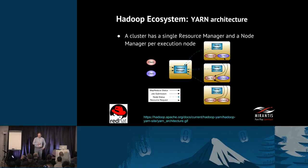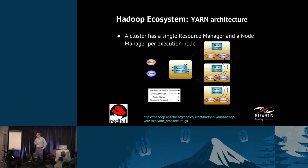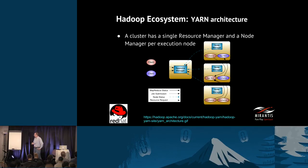For each framework you run, there is an application master. The application master goes back to the resource manager and says 'I need this amount of resources to run this framework,' then the resource manager allocates it and node managers act as the middleman managing it all. MapReduce itself in Hadoop has its own application master included, so you don't have to write that yourself — it's deployed for you, but that's what's happening under the hood.